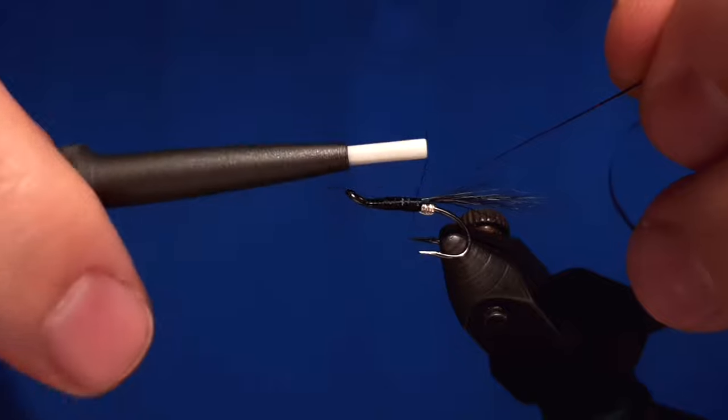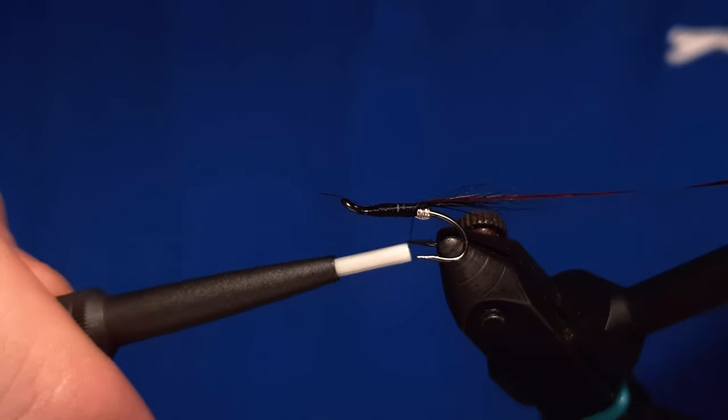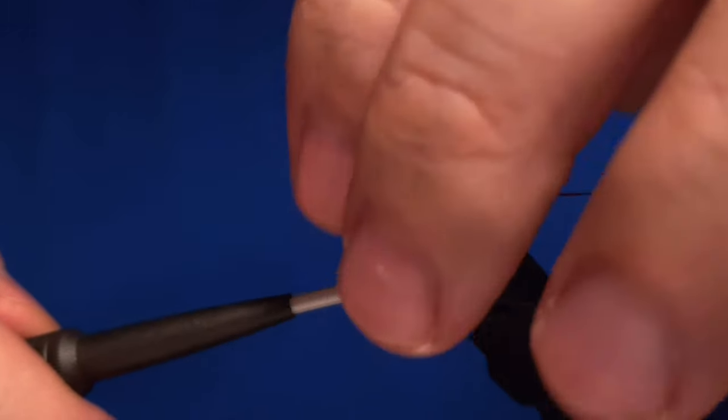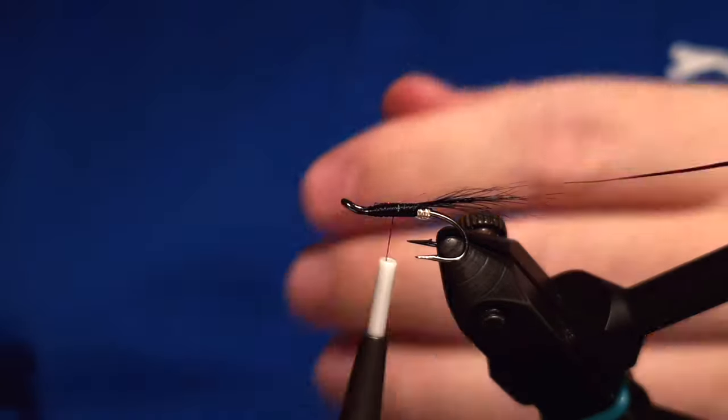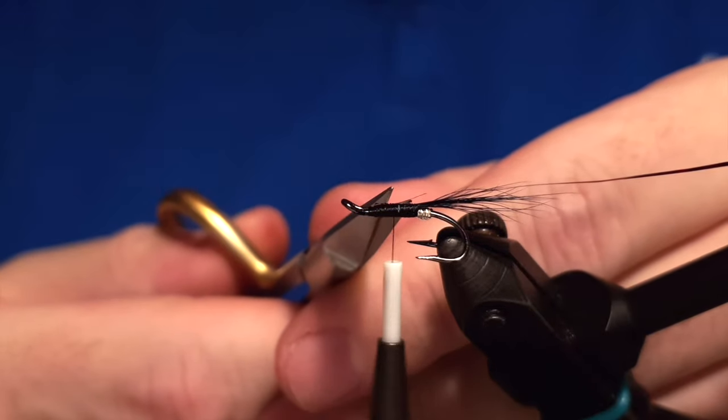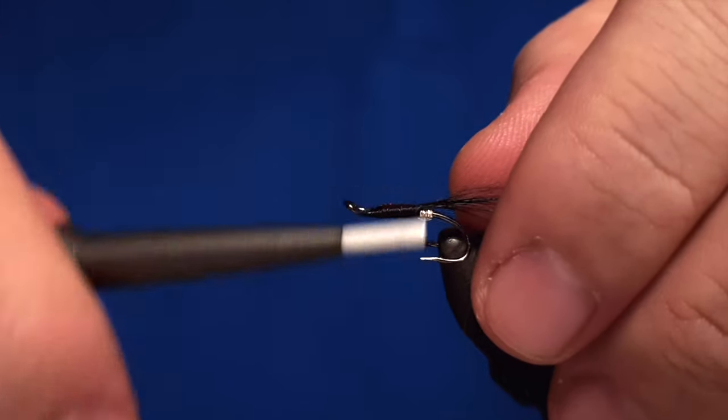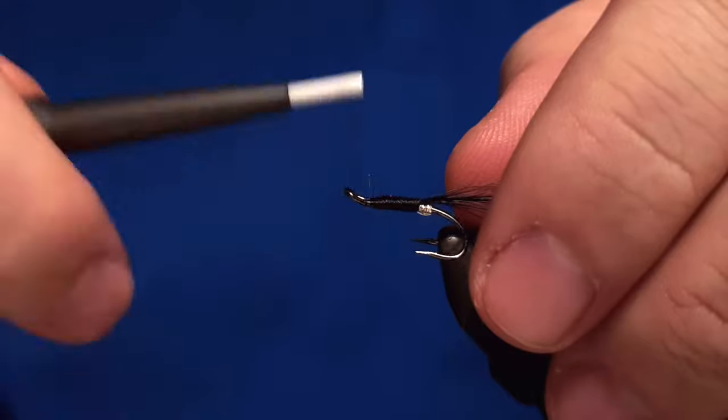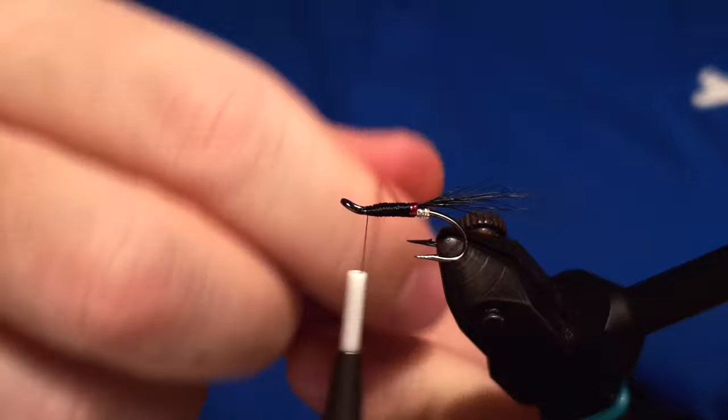Then we tie in the red holographic tinsel and get the thread in front, bend the tinsel, get it under again so it's not going to slide or go anywhere. And then we get the thread to the front of the hook close to the hook eye and then we will start to wrap the tinsel.